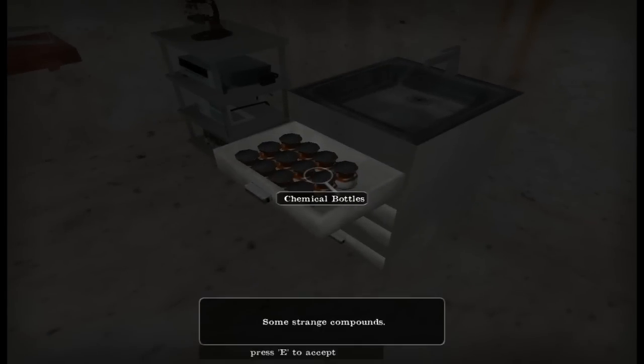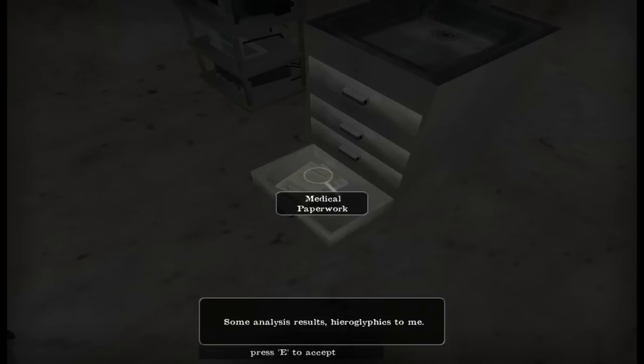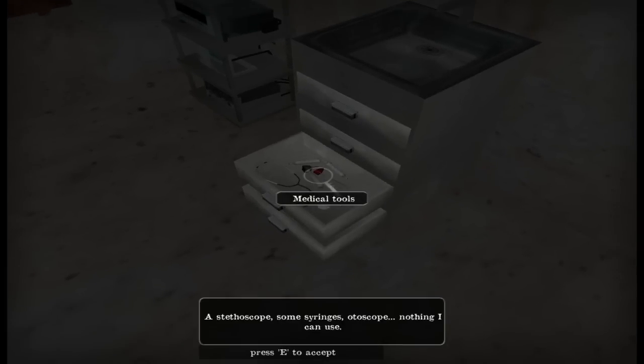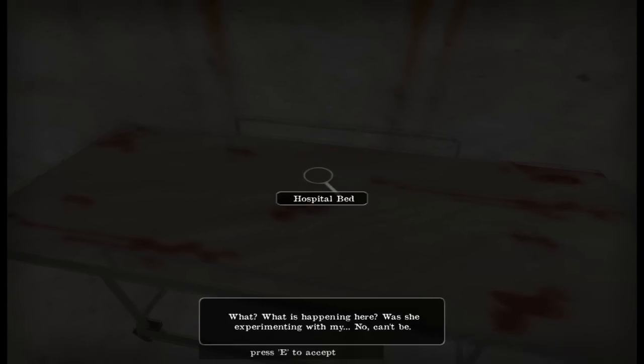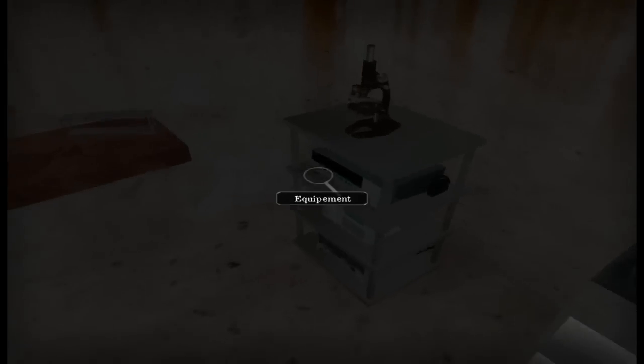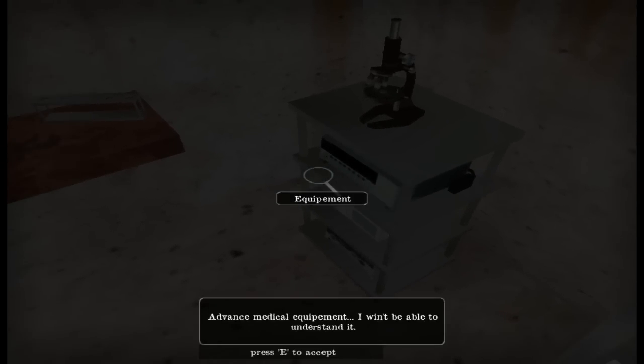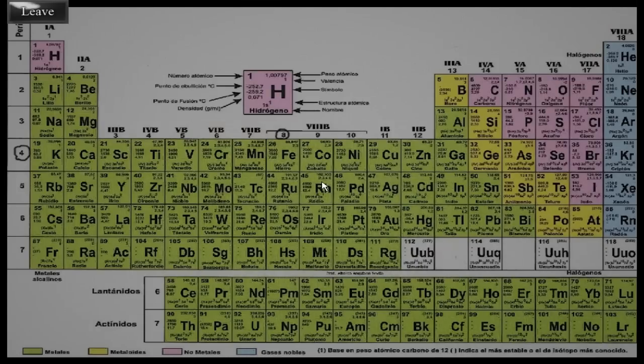Chemical bottles? Medical paperwork. Some analysis results. Hieroglyphics to me. Let's see. Medical tools. Stethoscope, some syringes, otoscope, whatever that is. Nothing I can use. Empty drawer. And we already saw the chemical bottles. Hospital bed. What is happening here? Was she experimenting with my... No, can't be. What is she talking about? That doesn't make any sense. Advanced medical equipment. I won't be able to understand it. Experiment phase one. I copied to my notebook. And the periodic table.